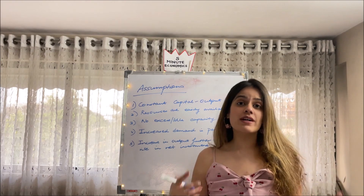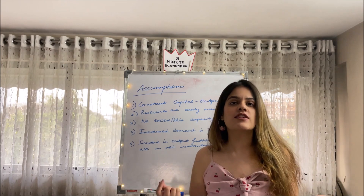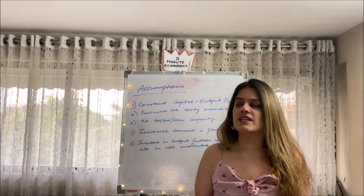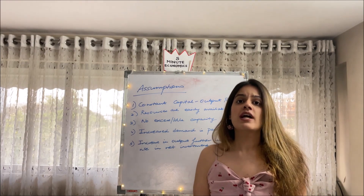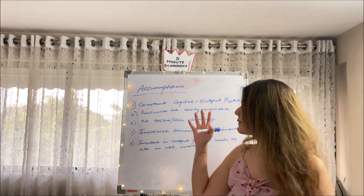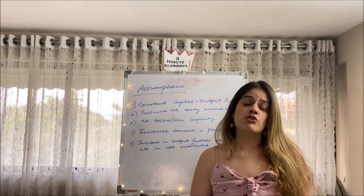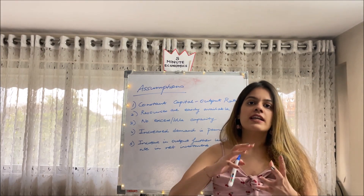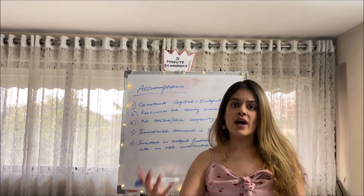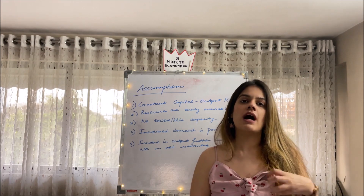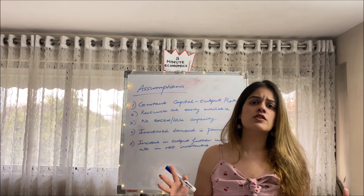In economics, the assumptions we take later come to be known as the criticisms, but for the successful functioning of a theory we do need to assume a few things. Number one, we've assumed a constant capital-output ratio. The accelerator theory depends on the capital-output ratio a lot. Basically, it refers to how much capital gives how much output — for example, four units of machinery give one unit of output, so the capital-output ratio is four to one.